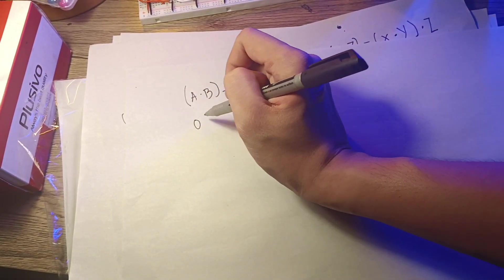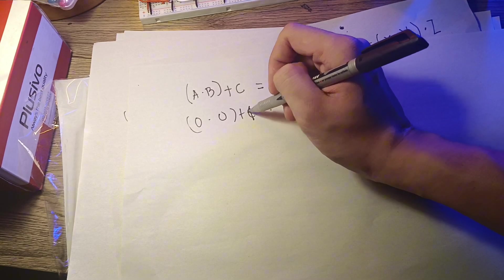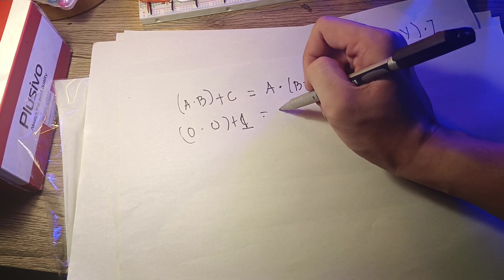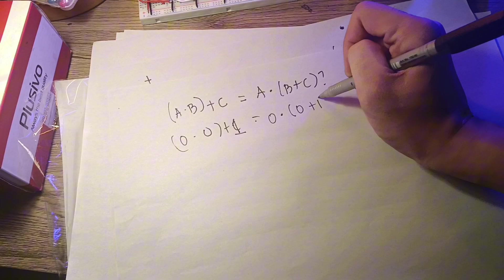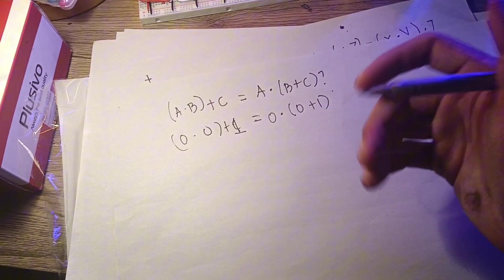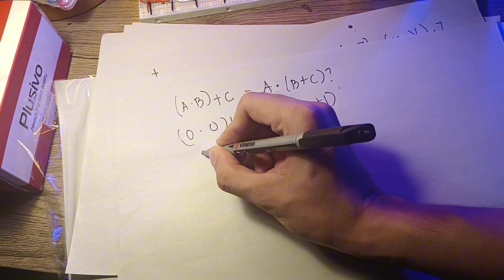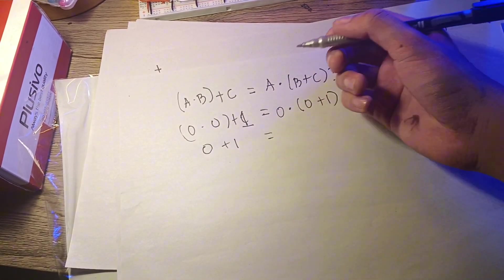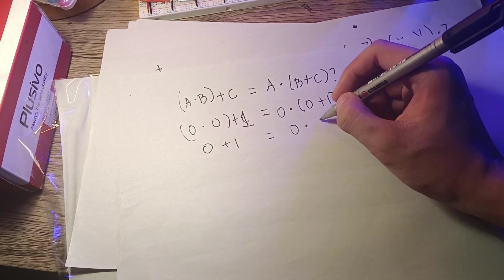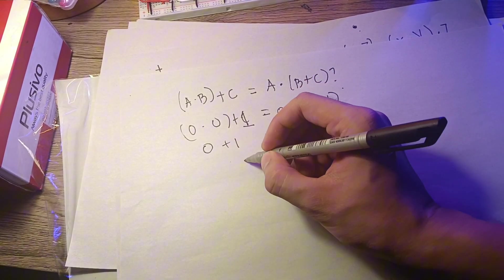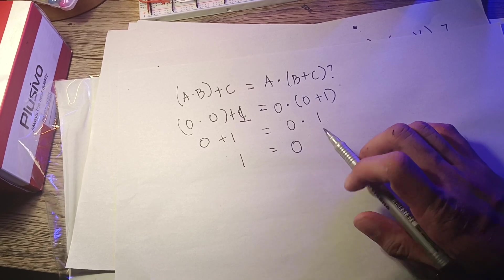For instance, if we put 0 in A, 0 in B, and then 1 in C, and same here, A is 0, B is 0, then C is 1. Are they equal? So 0 times 0 is 0 plus 1 equals 0 plus 1 is 1. And 0 times parenthesis 0 plus 1 equals 0 times 1 is 0. So the two have different values. The other one is equal to 0 and the other one is equal to 1.